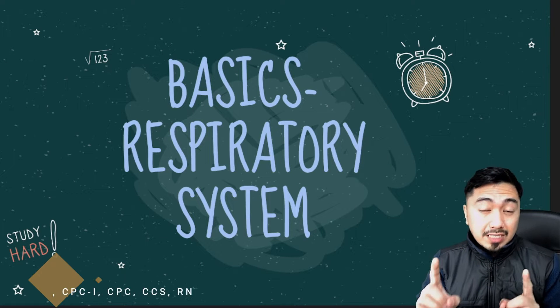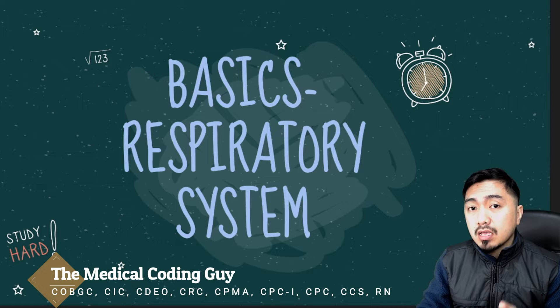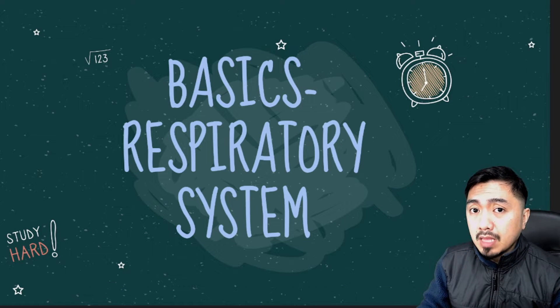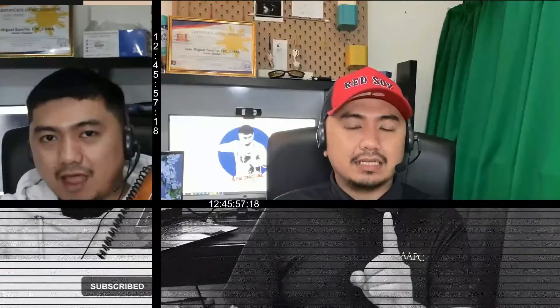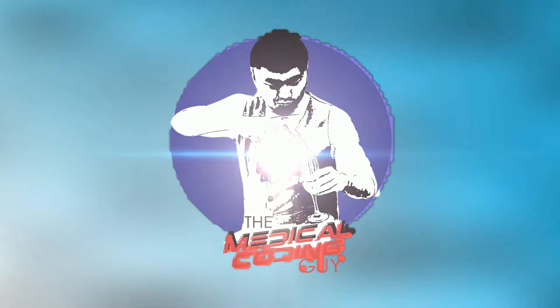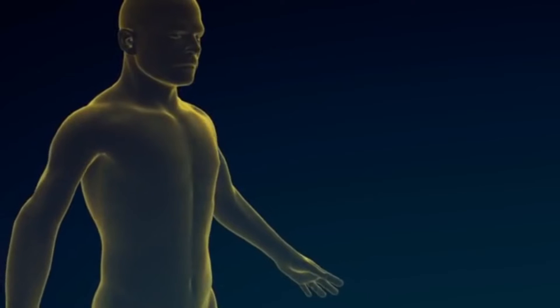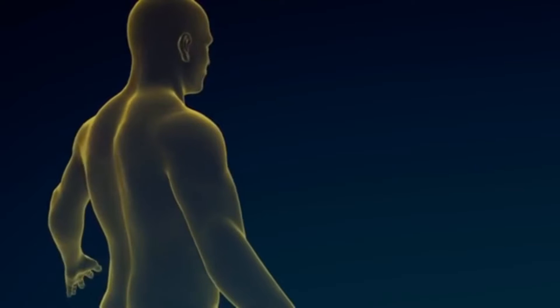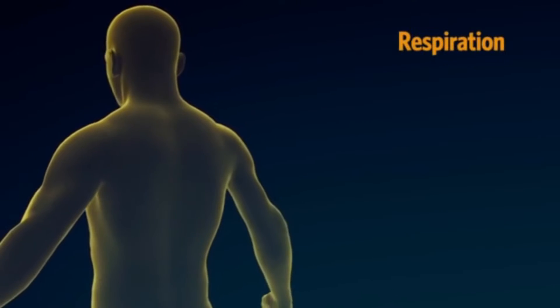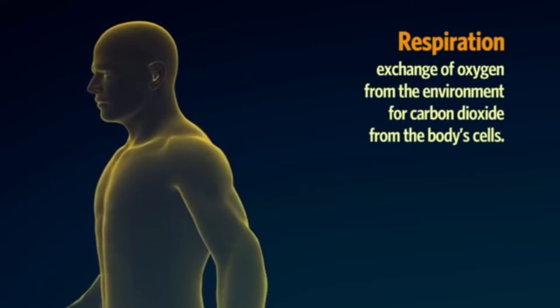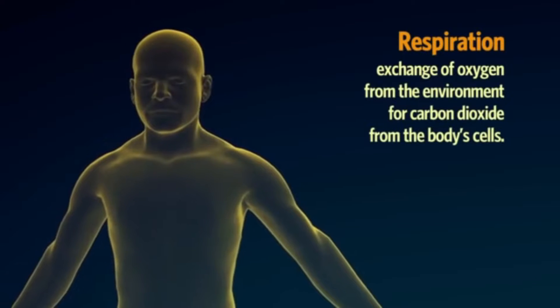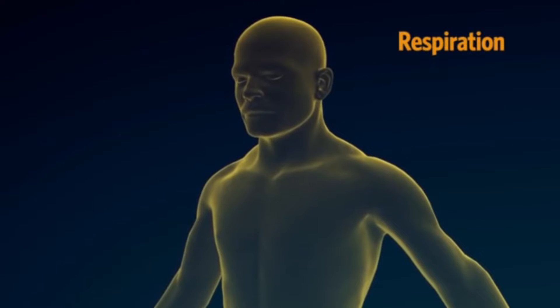Hello guys, welcome to our channel. In this episode, we will discuss everything about the basics of our respiratory system. I am the Medical Coding Guy. Our respiratory system is the network of organs and tissues that help us breathe. This system helps our body get oxygen from the air so our body systems can work. It also clears waste gases such as carbon dioxide from your blood.